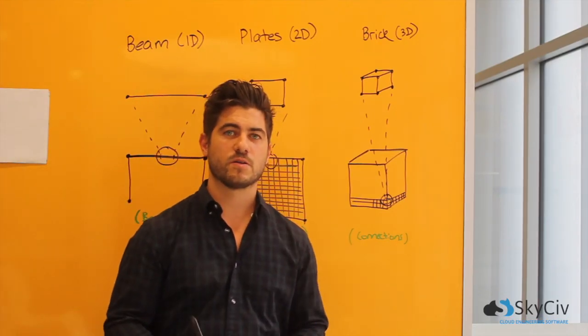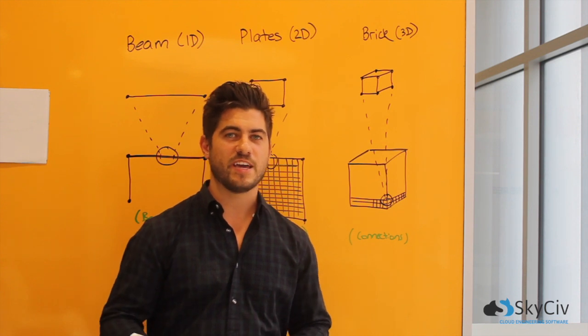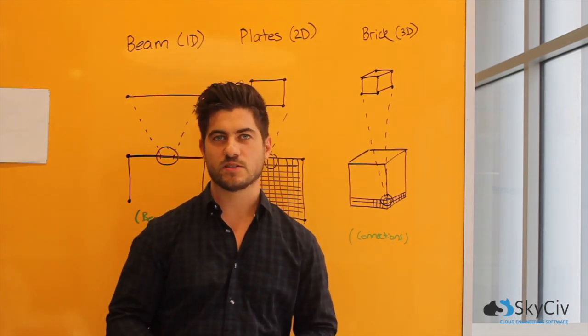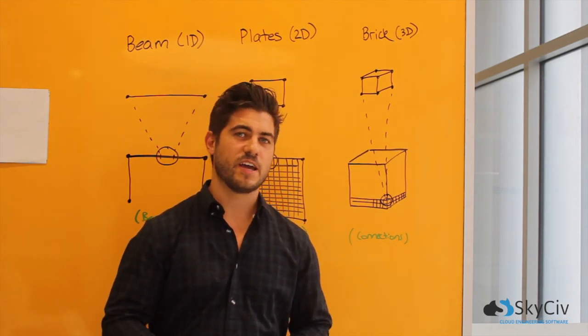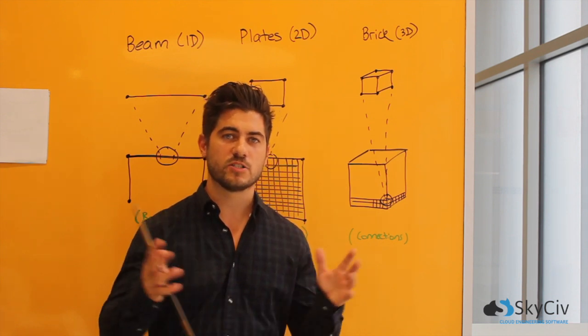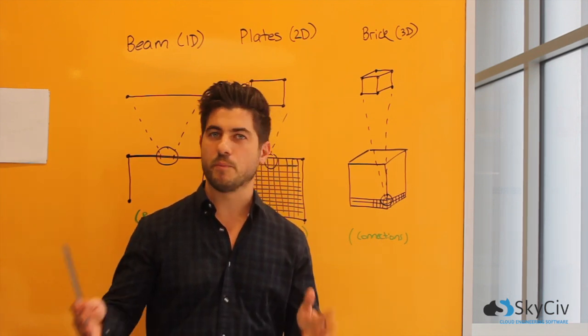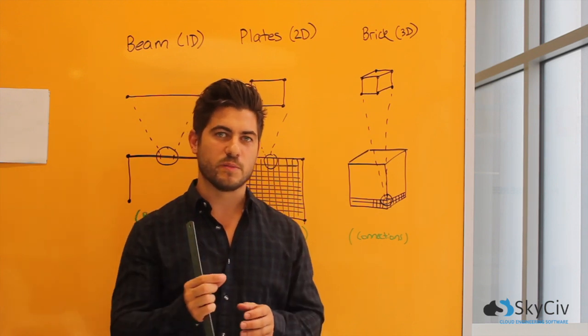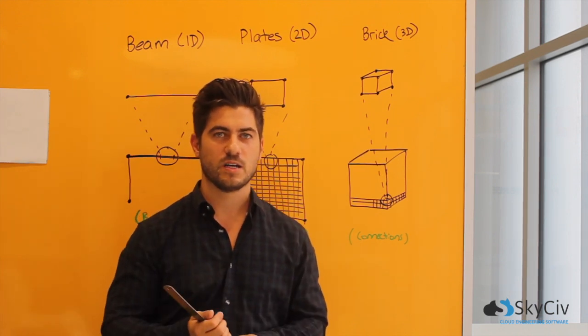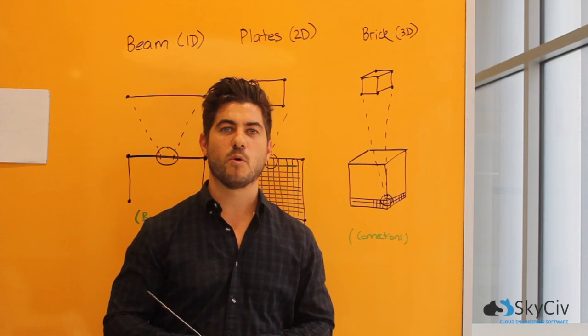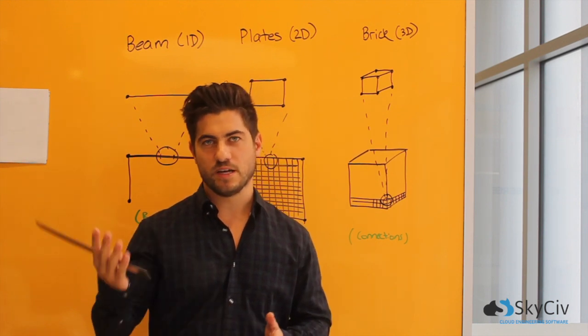So next we're going to look at a closer explanation of what FEA or finite element analysis means. So FEA is a process of taking a larger component such as a slab, a beam, or a column and pulling it into smaller elements to be calculated individually. This allows the structural engineer to get more accurate results out of what they're designing.